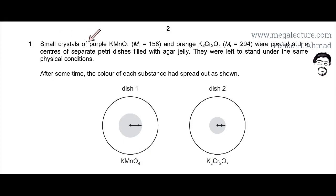The following question reads that a small crystal of purple KMnO4 and orange K2Cr2O7, the MR is also provided, were placed at the center of separate petri dishes filled with agar jelly. They were left to stand under the same physical conditions.